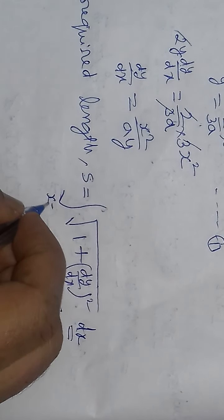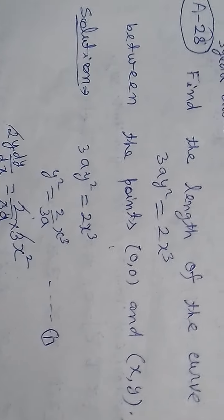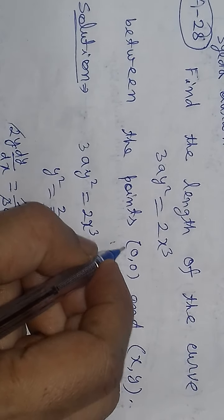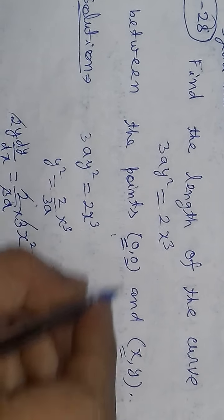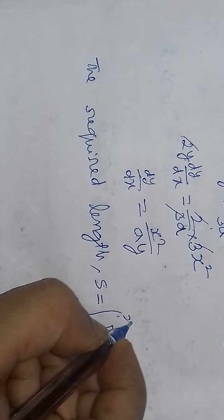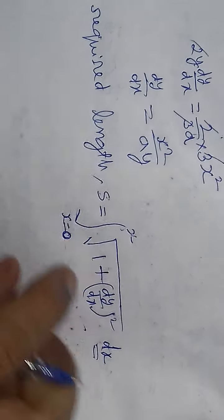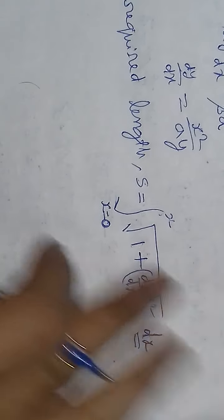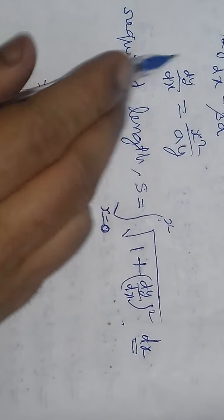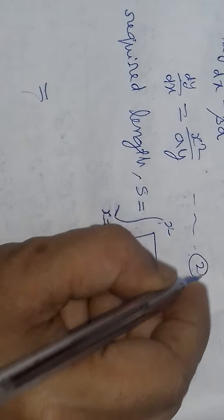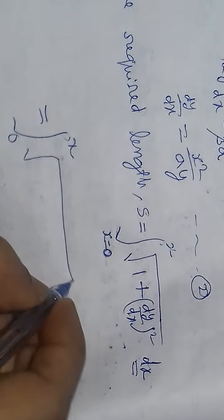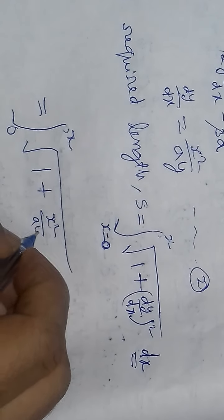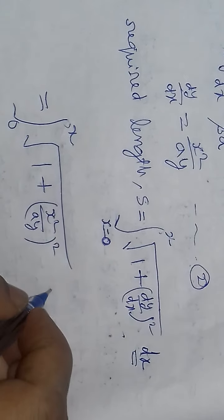We determine the limits. The curve runs between the points where the x-value changes from 0 to x. The dy/dx value found in equation number 2 is x²/(ay), and we substitute this into the formula: 1 + (dy/dx)² = 1 + x⁴/(a²y²).